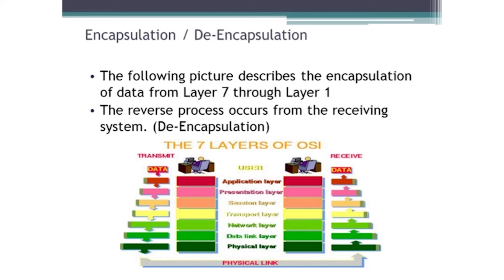Because of this process of encapsulation and de-encapsulation being done at every layer, you can change something about a layer in how it does its work, as long as the layer above it and below it can see the same information they need to do their job. So at layer 3, the network layer, when we go from an IPv4 address to an IPv6 address, as long as the transport layer above it and the network layer below it can deal with that traffic, things should work very well. It makes the scalability and ability to change things very easy, designed to give us an open protocol with no proprietary issues.